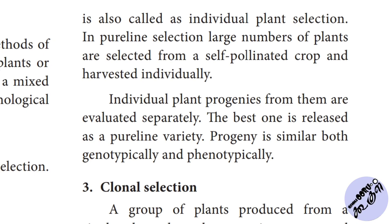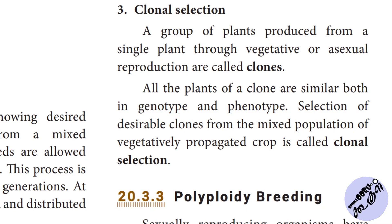That is pure line selection. For clonal selection: a group of plants produced from a single plant through vegetative or asexual reproduction are called clones. All plants of clones are similar in both genotype and phenotype. The selection of best clones from the mixed population of a vegetatively propagated crop is called clonal selection.